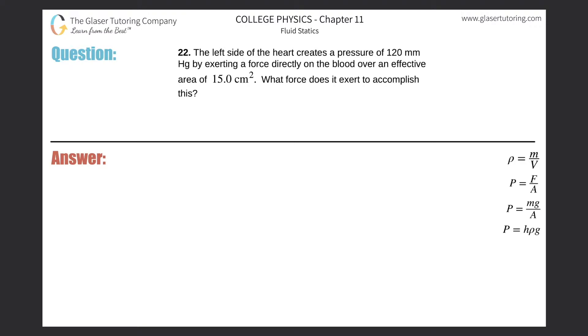Number 22, the left side of the heart creates a pressure of 120 millimeters of mercury by exerting a force directly on the blood over an effective area of 15 squared centimeters. What force does it have to exert to accomplish this?